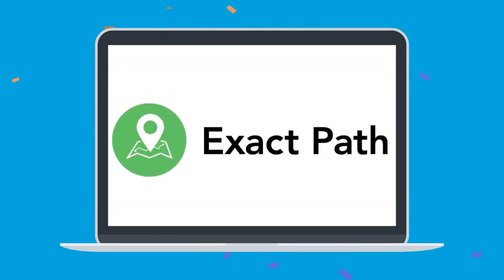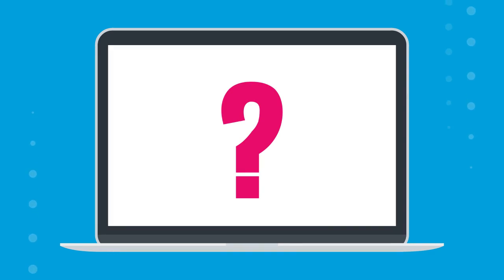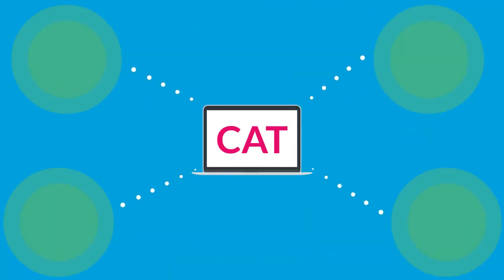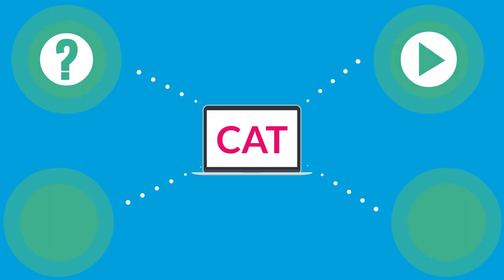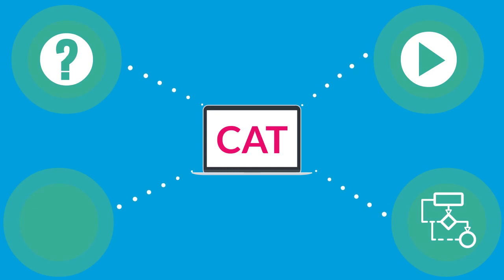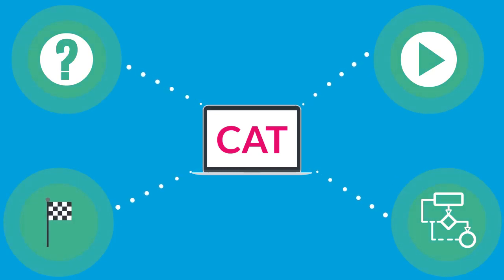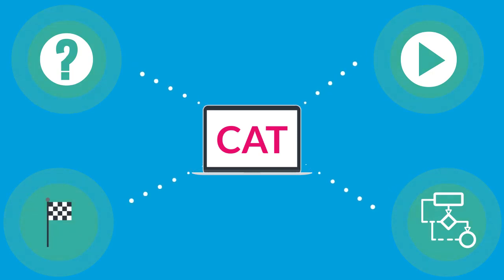We're excited about computer adaptive tests because the Exact Path Diagnostic is just that. So how does the CAT know which questions to administer? Each CAT has four main components: a bank of questions that can be administered, a rule for which question a student will get first, an algorithm to determine which question to give next — harder or easier — and a rule for when to end the test.